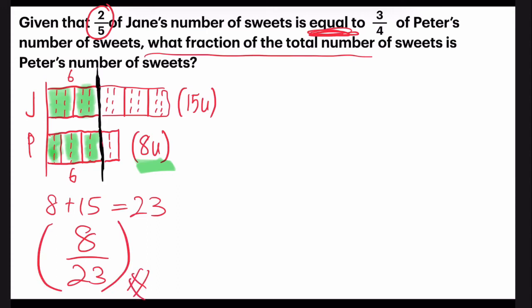That is my answer. Okay, now we shall move on to using the method of same numerator. I'm going to write this out. Two-fifths of Jane is equal to three-quarters of Peter.